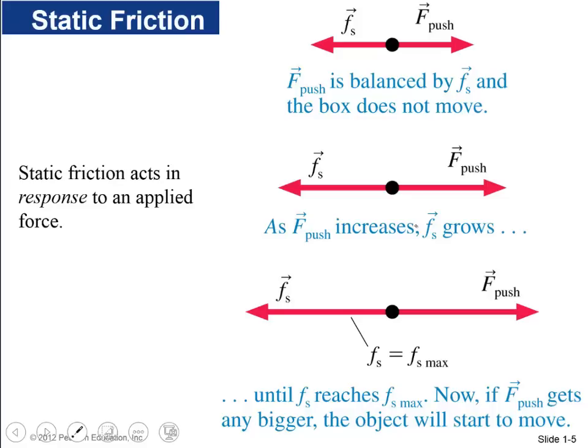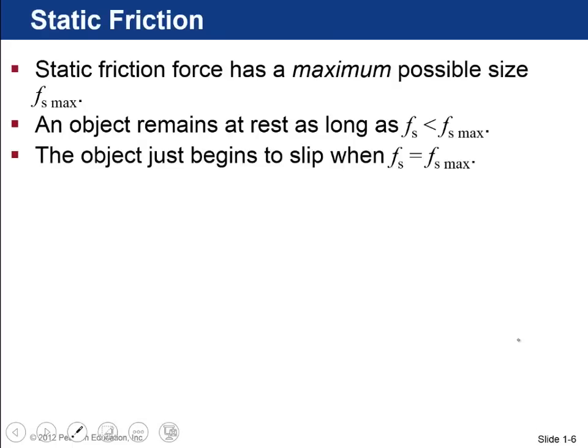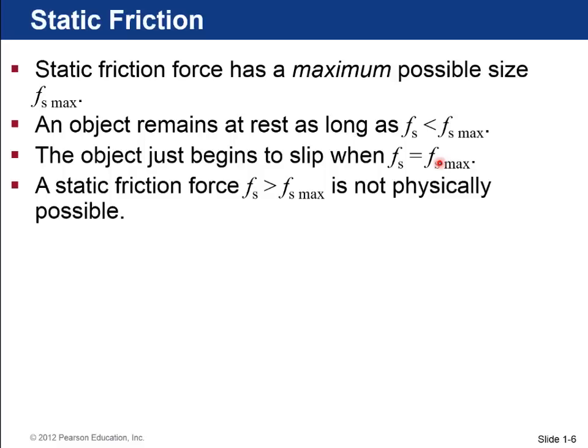So keep in mind that static friction acts in response to an applied force. So if you don't push the box, there's no static friction. If you push it to the right a little bit, then there's an equal and opposite static friction force that gets provided in order to keep it stuck in the floor. And as you push more and more, the static friction grows. And there's actually, we're going to find out next slide, that there's a maximum size to the static friction force. And then if you push more than that, then the box does start moving. Okay, so an object remains at rest as long as you're less than this maximum static friction force. And it just starts to slip when you reach Fs equals Fs max. And the static friction force that's greater than Fs max is not physically possible.